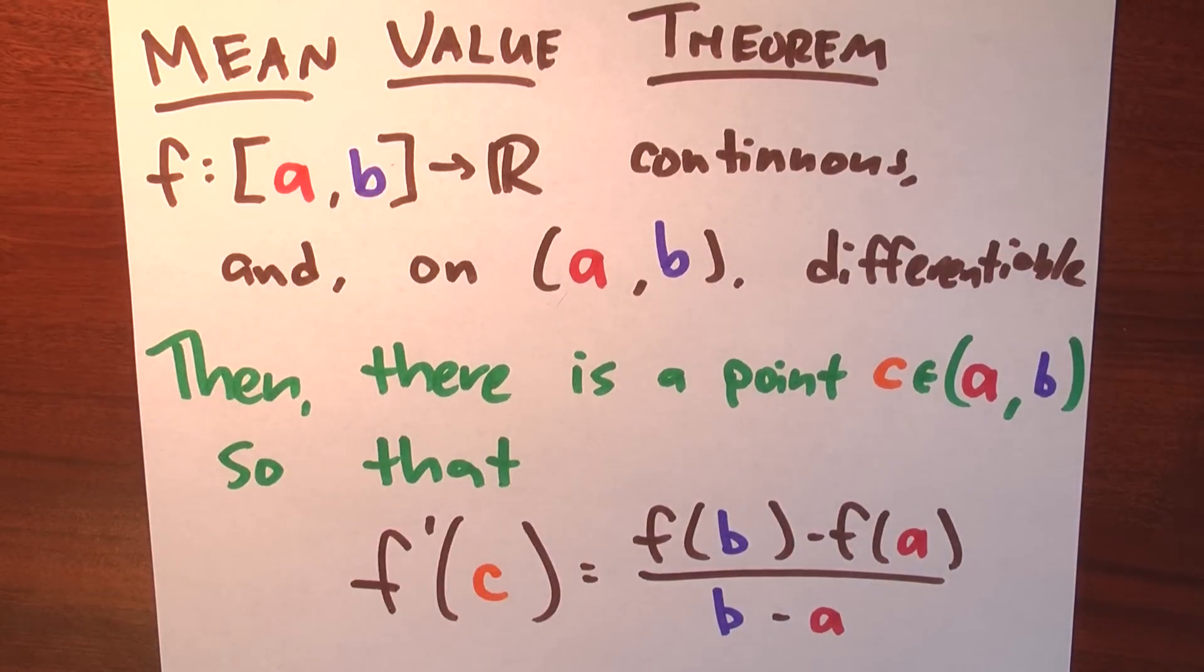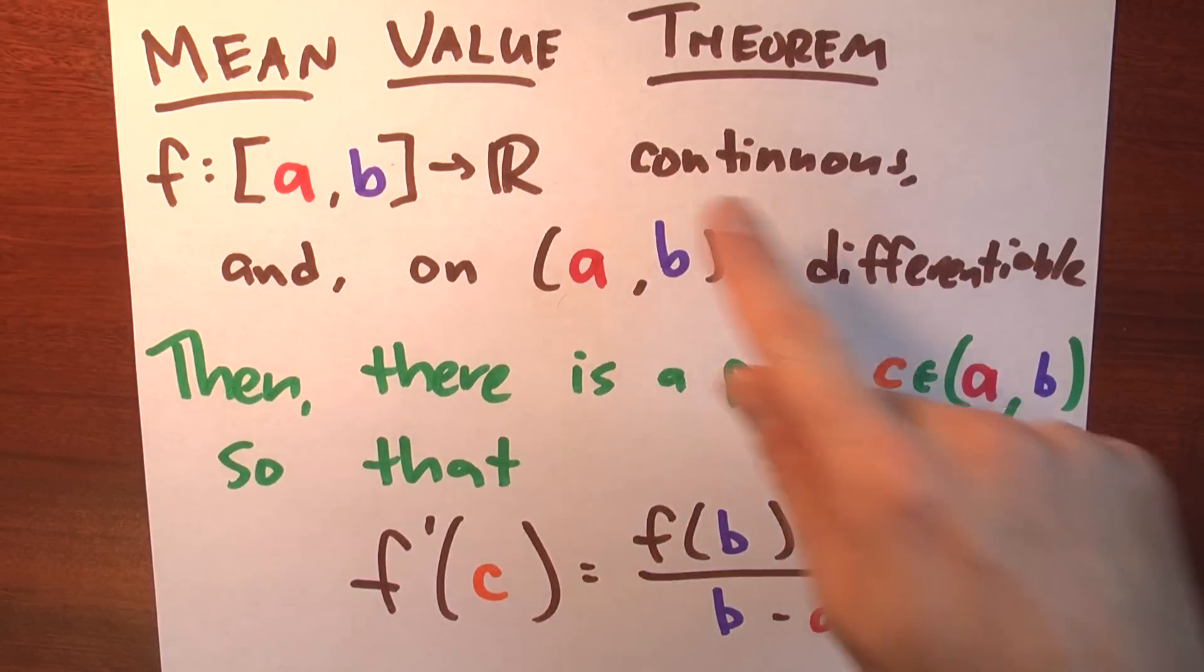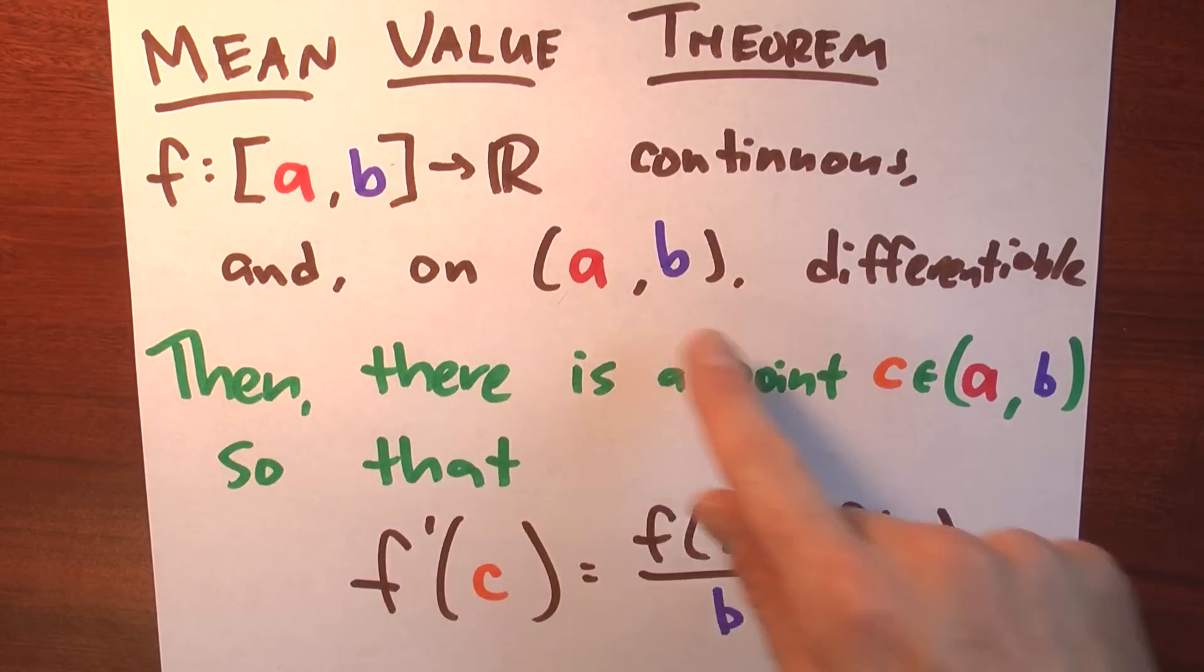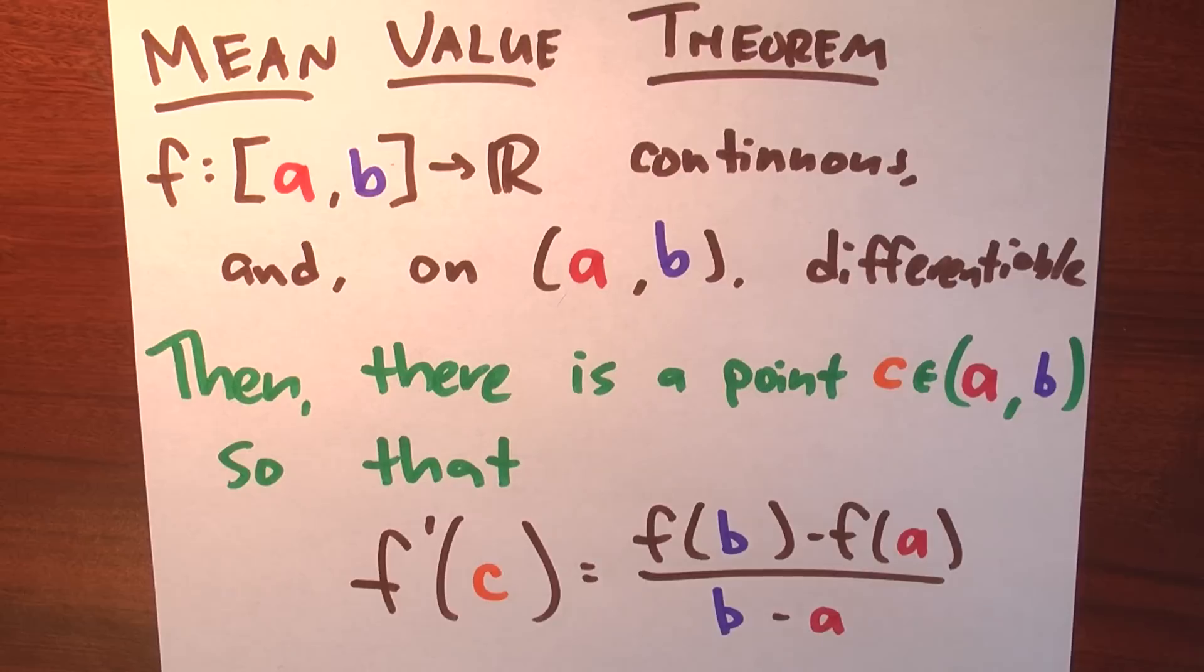Suppose I got some function f, it's defined in the closed interval a to b, and its values are real numbers. It's a continuous function, so it's continuous on the closed interval between a and b, and on the open interval between a and b, it's differentiable.